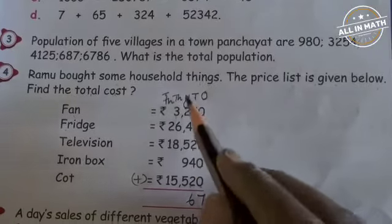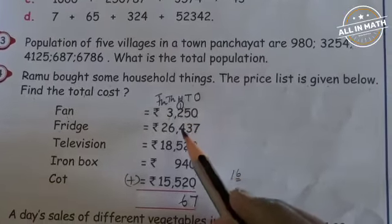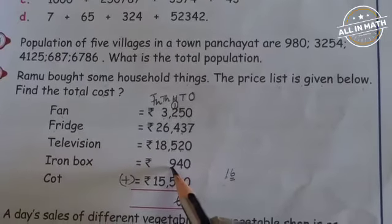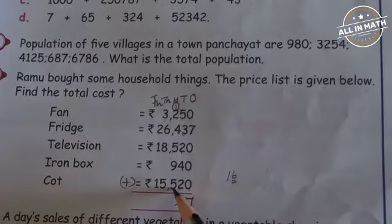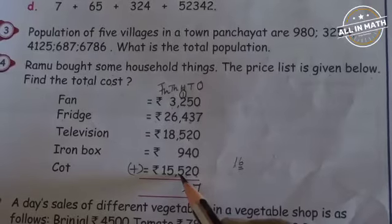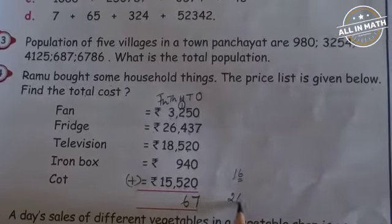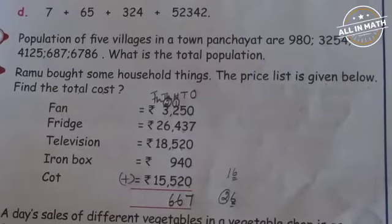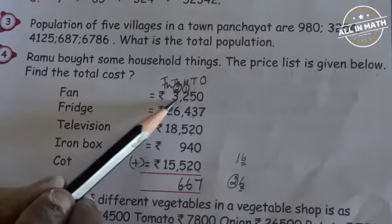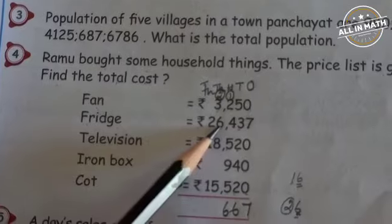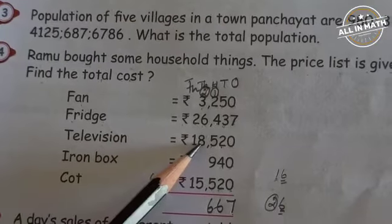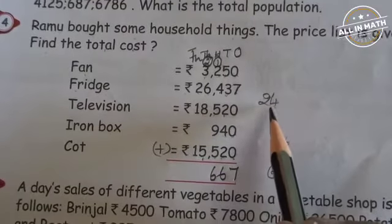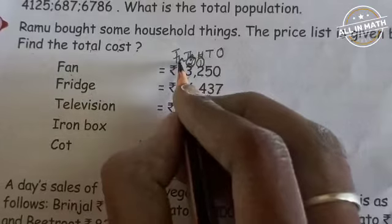Now we are going to add the numbers in the 100's place. 1 plus 2 is 3. 3 plus 4 is 7. 7 plus 5 is 12. 12 plus 9 is 21. 21 plus 5 is 26. So write 6 in the 100's place and take 2 as a carry over in the 1000's place. Now add the numbers in the 1000's place. 2 plus 3 gives 5. 5 plus 6 gives 11. 11 plus 8 gives 19. 19 plus 5 gives 24. Write 4 in the 1000's place and take 2 as a carry over in the 10,000's place.